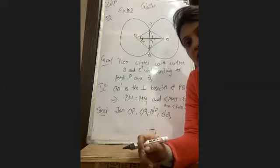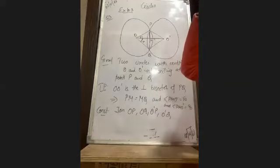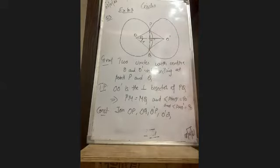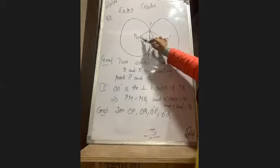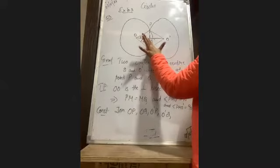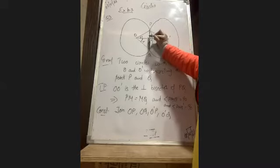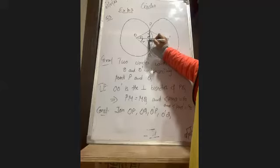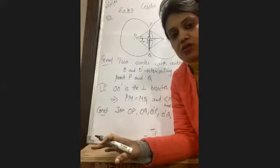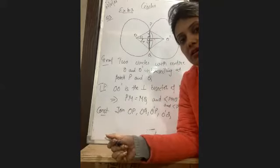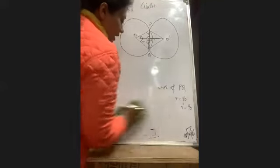Angle 1 is equal to angle 2. Now look at the smaller triangles. OP equals OQ radii of same circle, OM equals OM common, and angle 1 equals angle 2 as proved above. Therefore by SAS the triangles are congruent. If the triangles are congruent then PM equals QM by CPCT, and angle 3 equals angle 4. These make a linear pair giving 90 degrees. I hope everyone has understood. If any doubt, raise your hand.